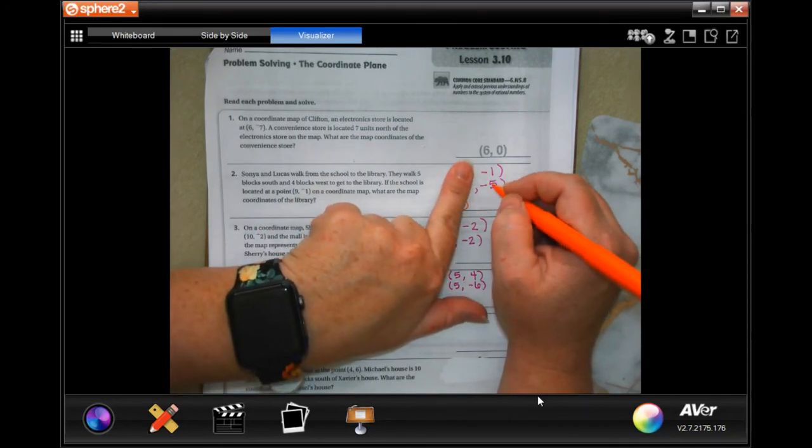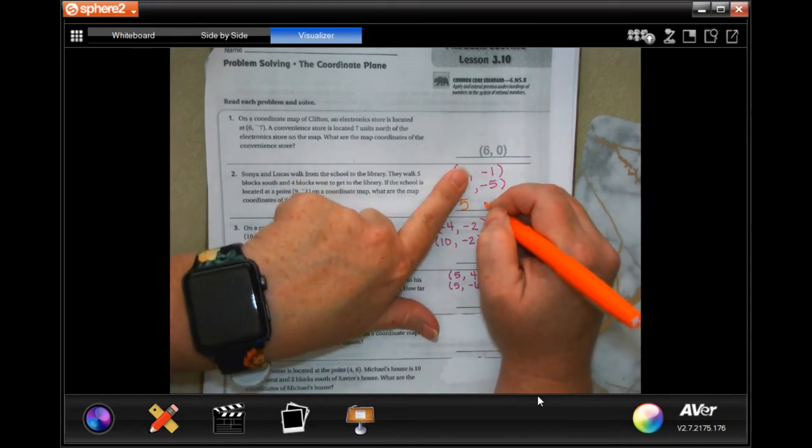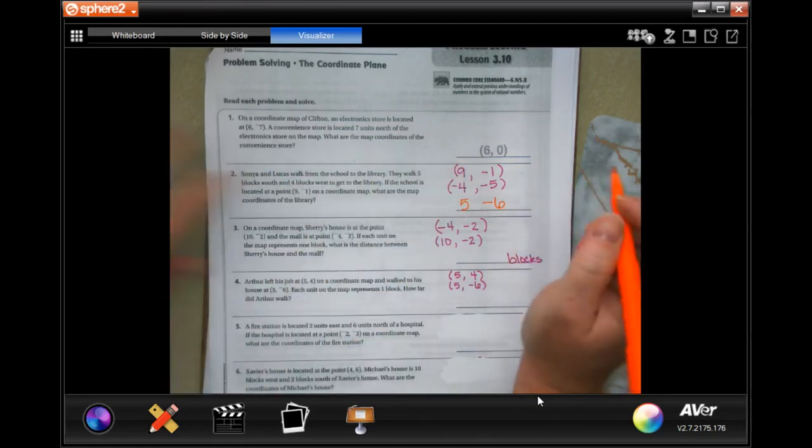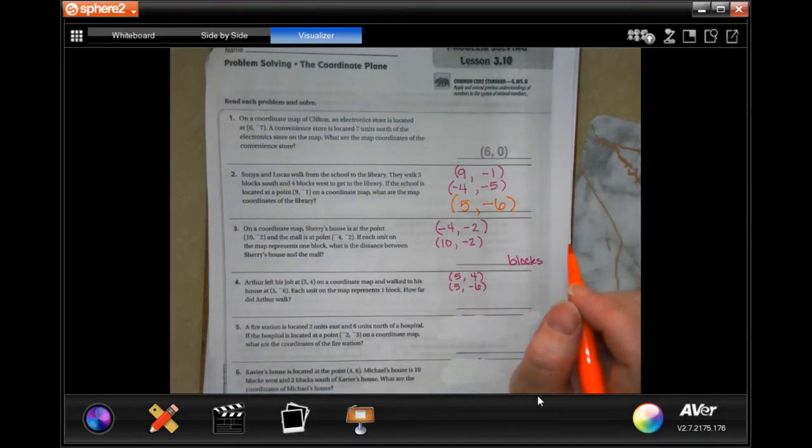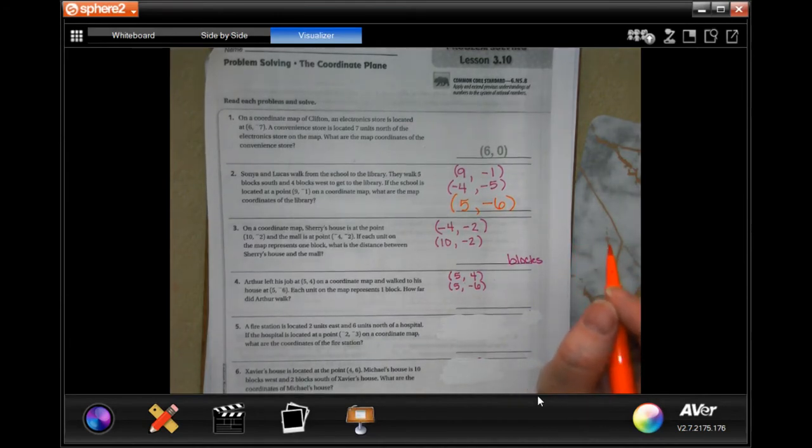When you have two negatives, you add them together. So you should have 5, negative 6.